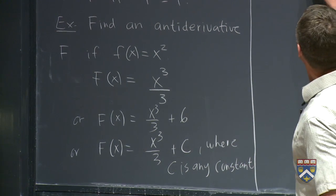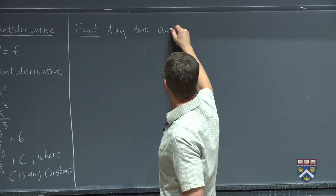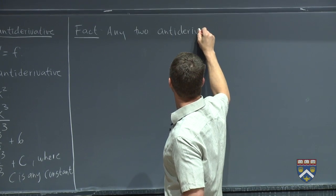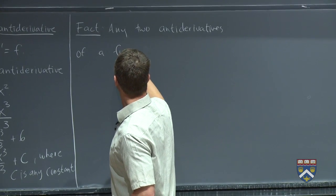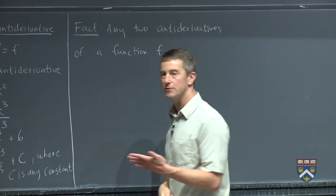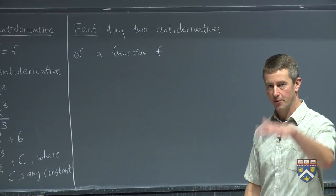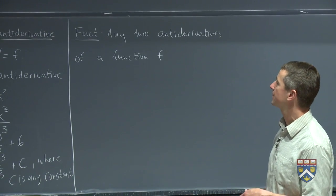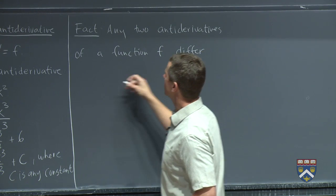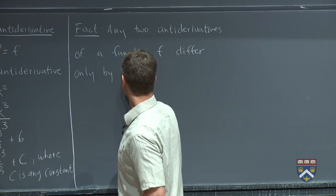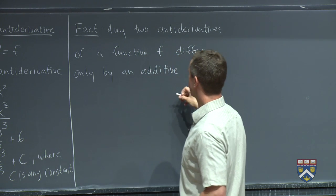So in fact, any two, and we'll use this fact in our next video segment, any two antiderivatives of a function little f, how different can they be? They can only differ in the way that we just saw. Their graphs must be vertical shifts of one another. So any two antiderivatives of a function little f differ only by an additive constant, that plus c, an additive constant.